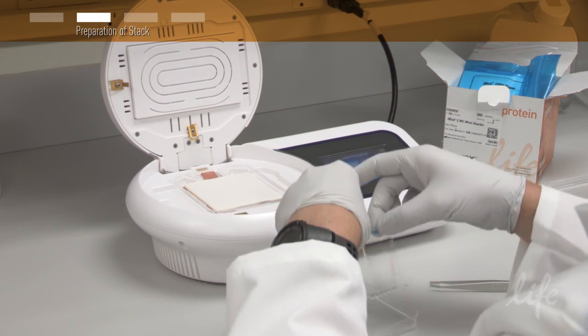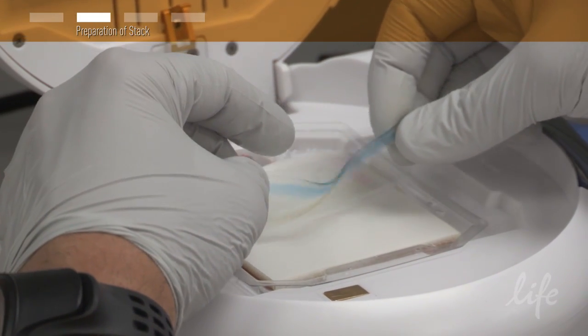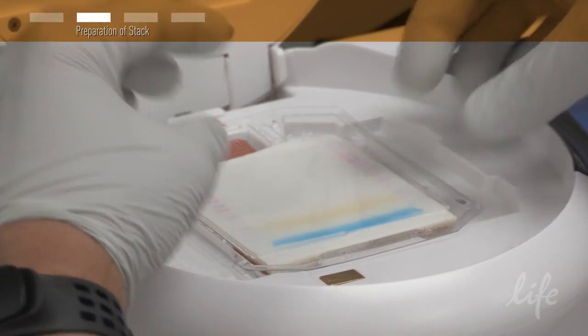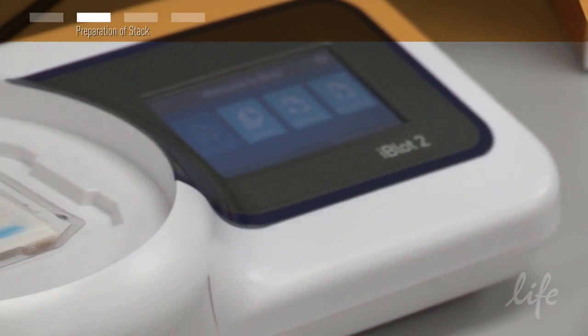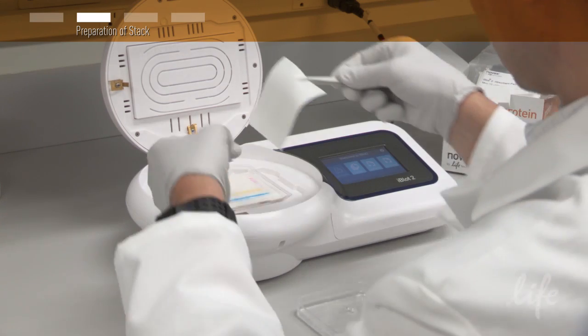Next, pick up your pre-run gel and place it on the transfer membrane of the bottom stack. Pre-soak an iBlot filter paper with deionized water and place it on top of the gel.